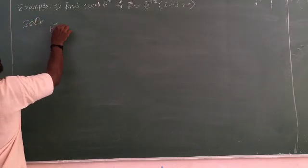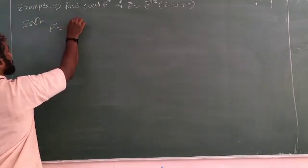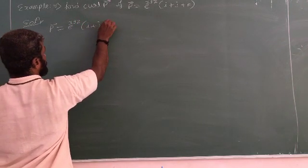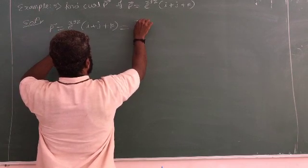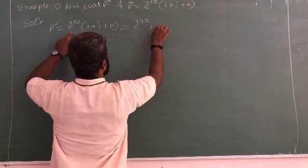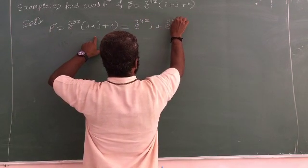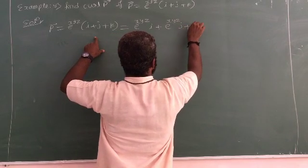Vector P equals e^(xyz) times (i plus j plus k), so that equals e^(xyz)i plus e^(xyz)j plus e^(xyz)k.